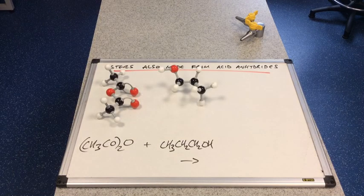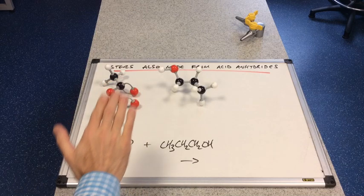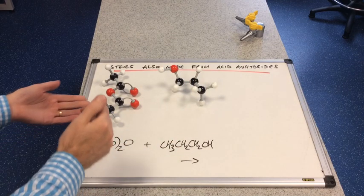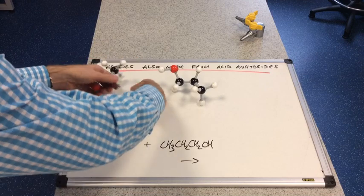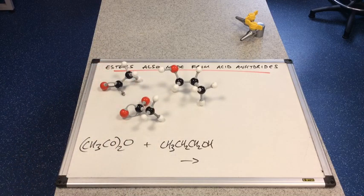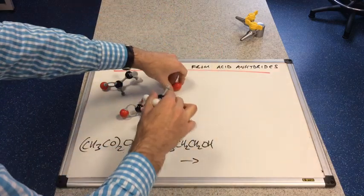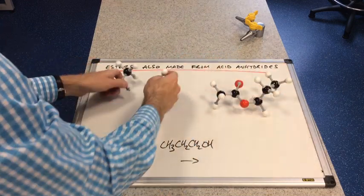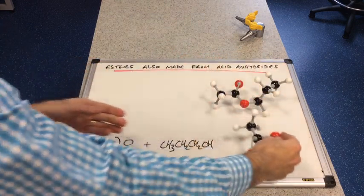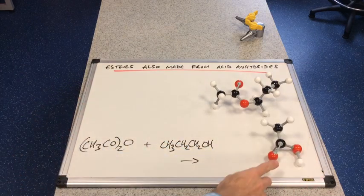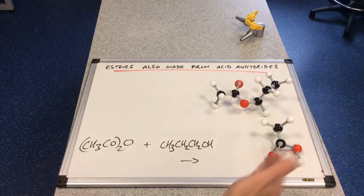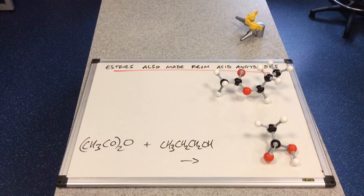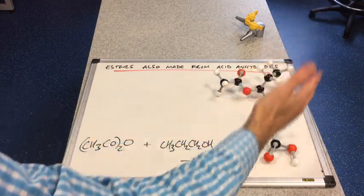Let's make an ester from an acid anhydride. With ethanoic anhydride and propan-1-ol, we break the bond between the two carbonyl groups and the bond in the alcohol. This gives us the ester and — unlike the carboxylic acid route — we don't get water; we get a carboxylic acid instead. From ethanoic anhydride we get ethanoic acid. So esters made from acid anhydrides produce an ester and a carboxylic acid.